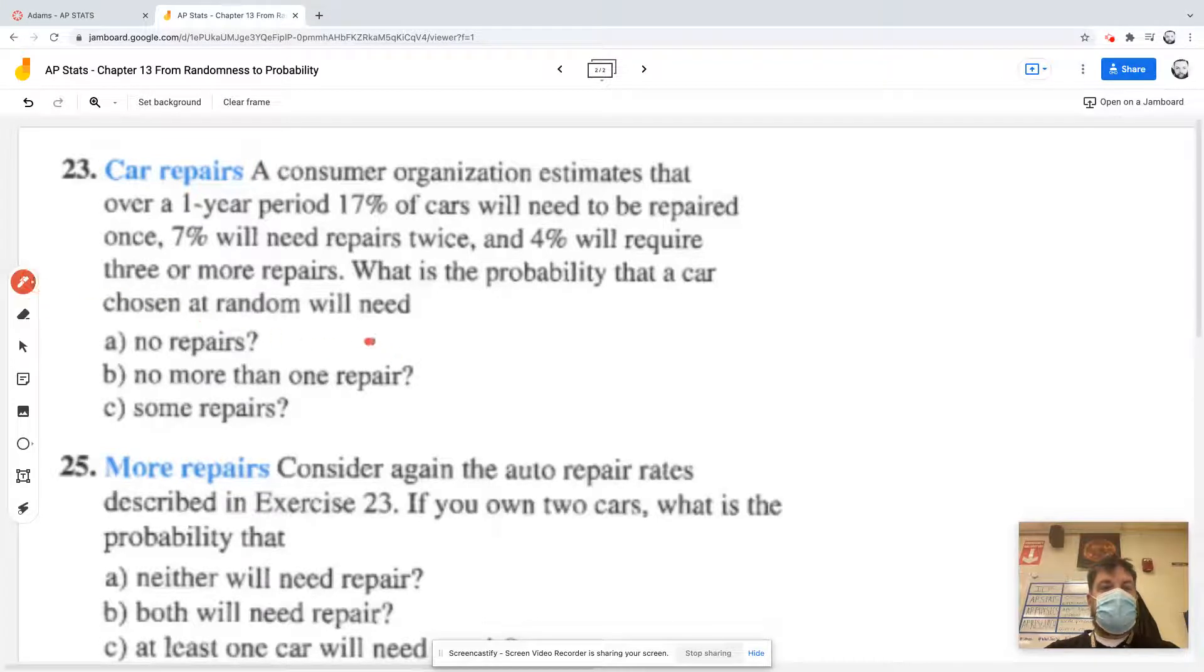And basically if you were to do problem number 23, I'm just gonna write the answers down. I'm not gonna go over 23 because it sounds like you guys know how to do that. But what was the probability? And this is just one car. What's the probability of no repairs? So you should have gotten 0.72 or 72%. Part B says what's the probability of no more than one repair? So you should have gotten 0.89 for that. And then some repairs you should have gotten 0.28.